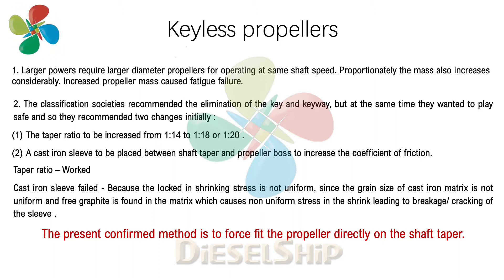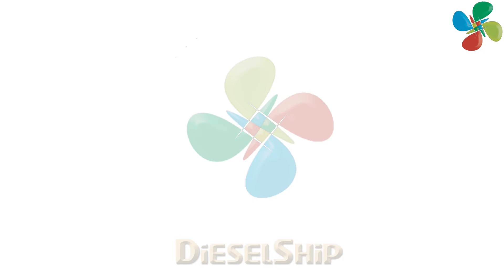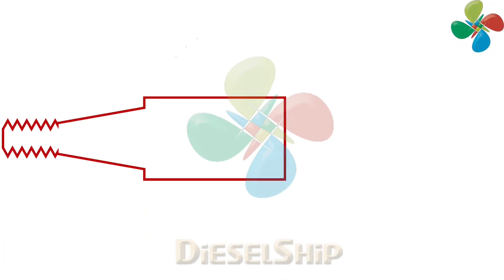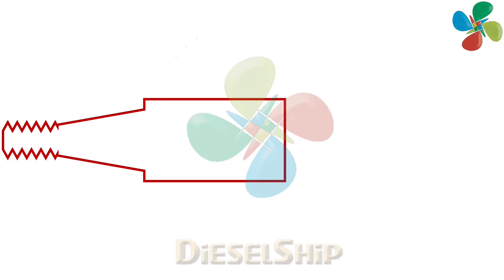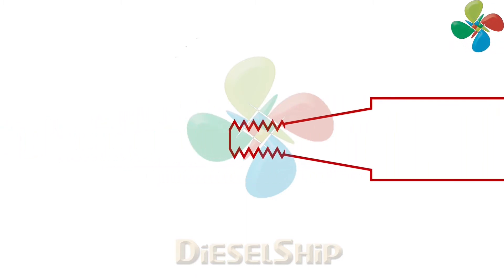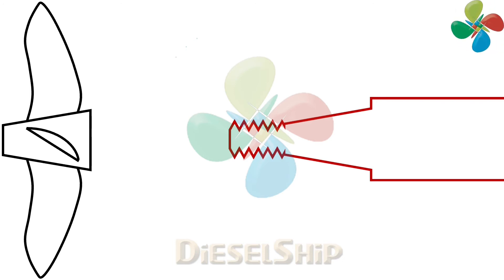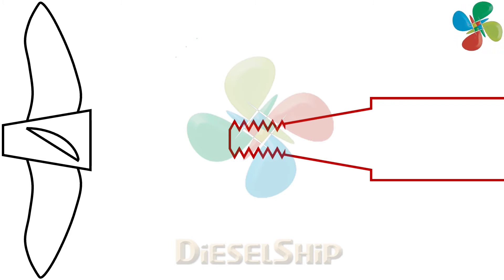The present confirmed method used on most ships today is to force fit the propeller directly onto the shaft taper. In the animation, what you see is the tail shaft with the shaft taper and the threaded portion for the pilgrim nut to attach. This is the propeller with the tapered boss — I've shown it as a tapered shape to make it easier to understand. The propeller is fitted this way, and then the pilgrim nut is attached to hold the propeller in place.